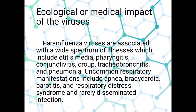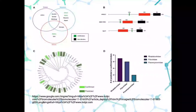The ecological and medical impact of the virus: para-influenza viruses are associated with a wide spectrum of illness, including otitis media and more. Uncommon respiratory manifestations include apnea and other complications. Rarely, disseminated infections occur. These images present how this virus affects us ecologically and economically through the suffering caused by its effects.